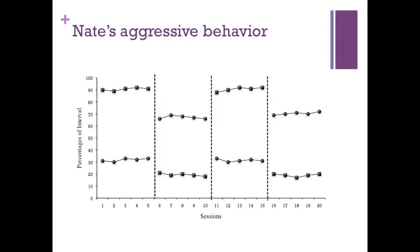For Nate, during baseline, aggressive behaviors showed a stable trend and level, occurring an average of 90.6% of intervals over five sessions, and on-task behaviors occurred an average of 31.8%. During treatment, aggressive behaviors decreased to an average of 19.4% and on-task behaviors increased to an average of 67.2% of intervals over five sessions.